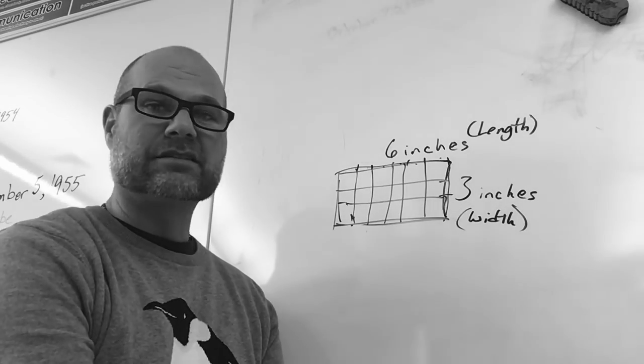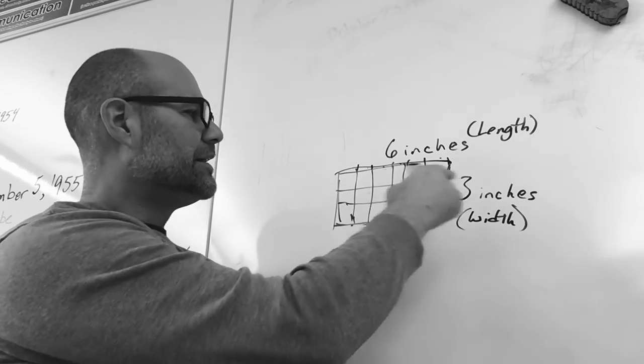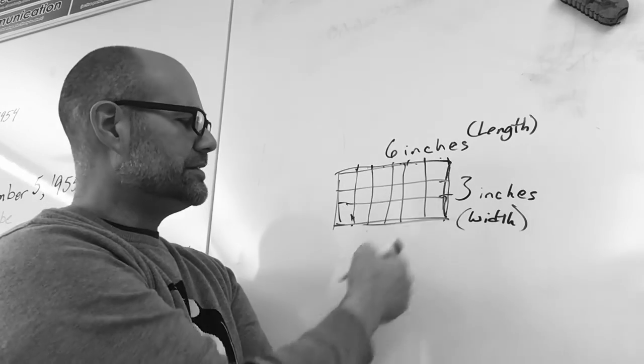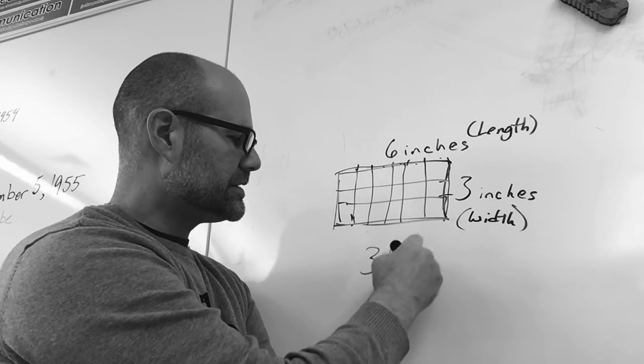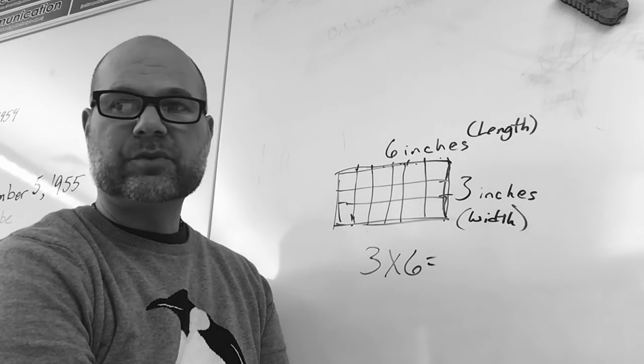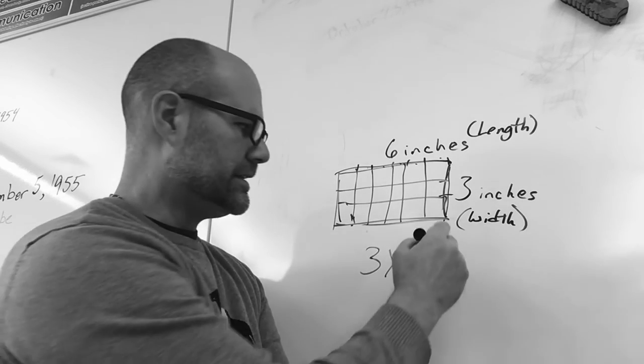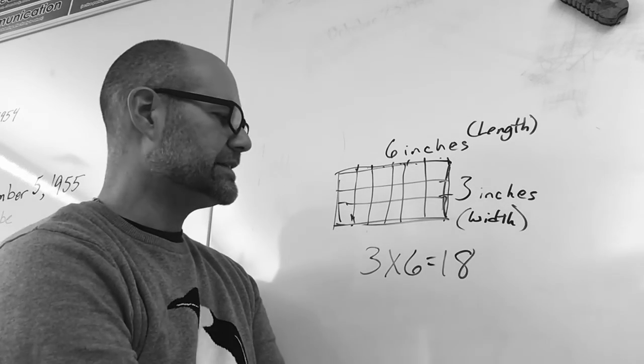And what do we do with arrays? Well, we multiply this side by this side. We can multiply 3 rows of 6. 3 times 6 equals, if you know your multiplication facts, it's 18. 3 times 6 equals 18.